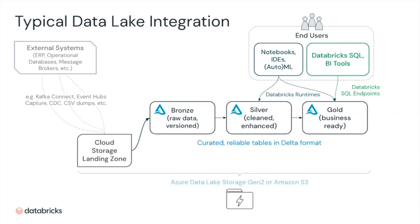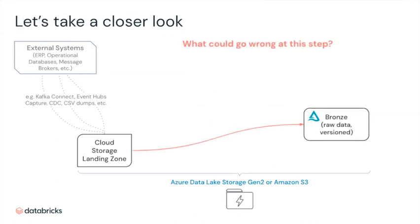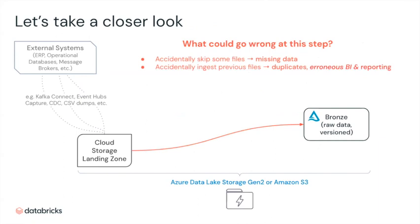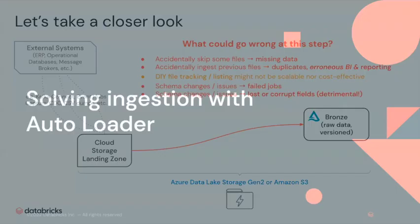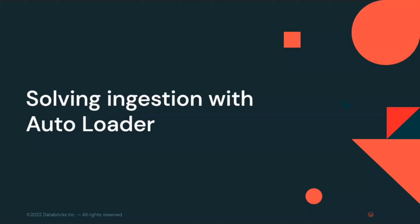What Autoloader really helps with is that initial ingestion stage. There's a lot of things that can go wrong when ingesting data — companies spend a lot of time and have a lot of headaches just getting data into their system. You can miss files, reload previous files, or build processes that don't scale. What happens when schemas change? Does it fail, evolve with it, or enforce it? Autoloader is Databricks' solution to handle all of this in one package.